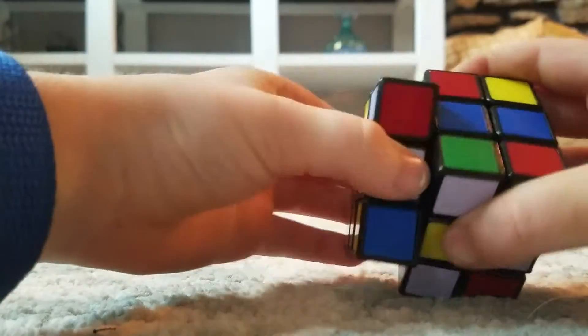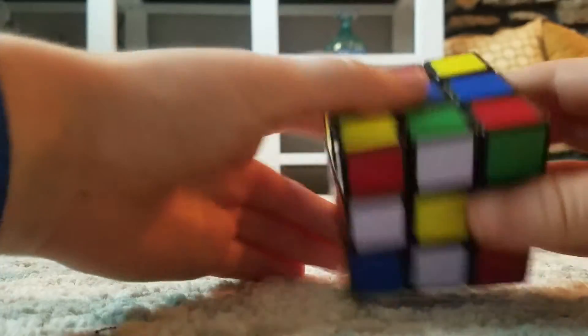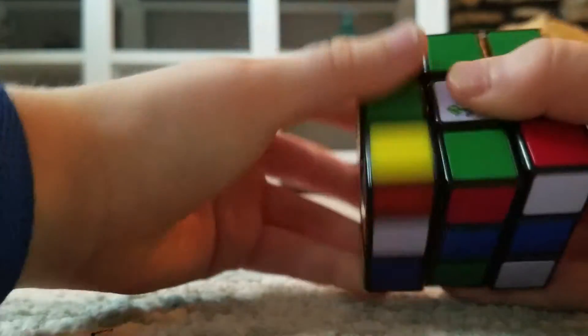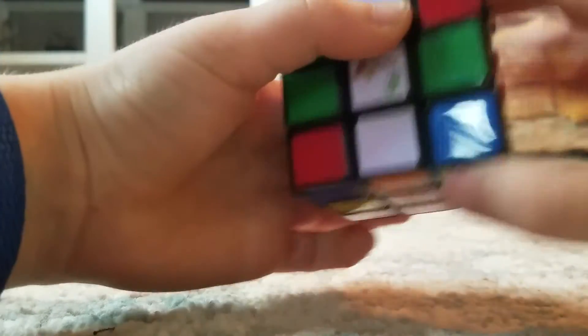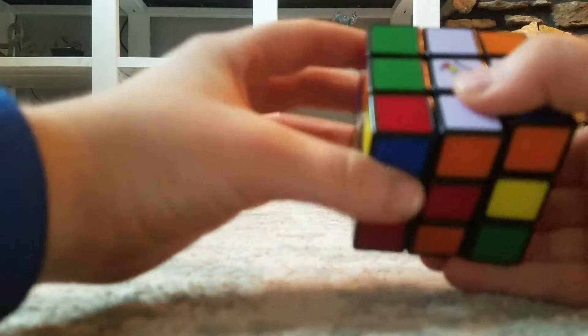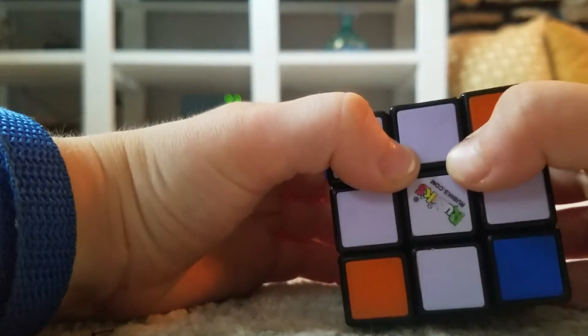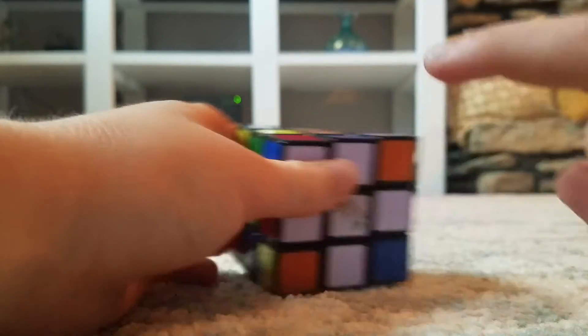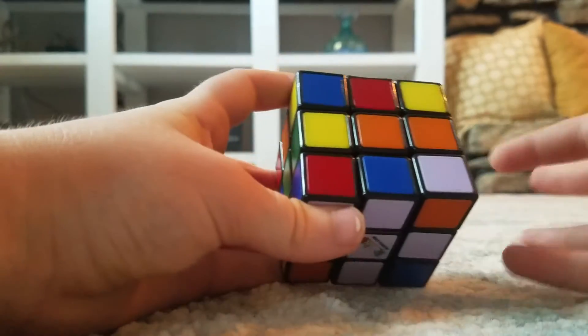All right, so then you want to twist it twice up to where it's right here, turn it twice up. So this is called the white cross. This stays down the whole time you're solving.